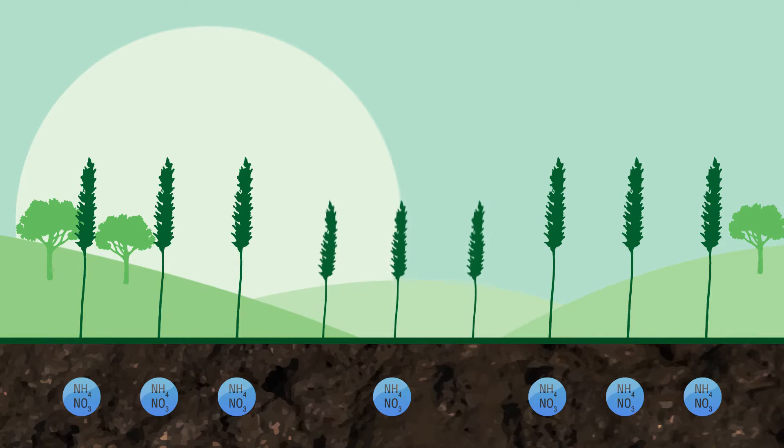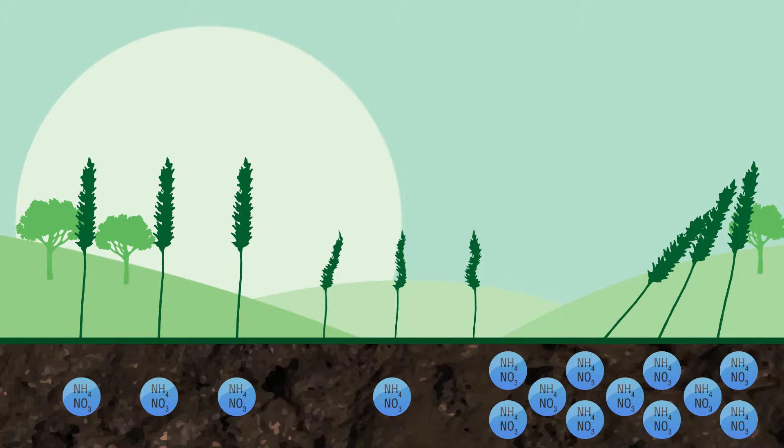Not enough nitrogen results in failure to achieve yield potential and protein levels. Over-application causes crop lodging, wastes money and damages the environment.